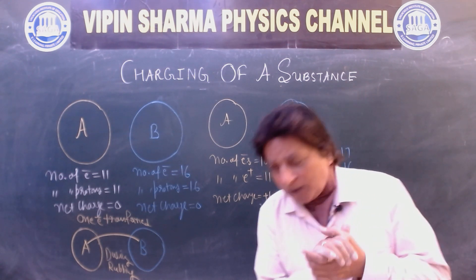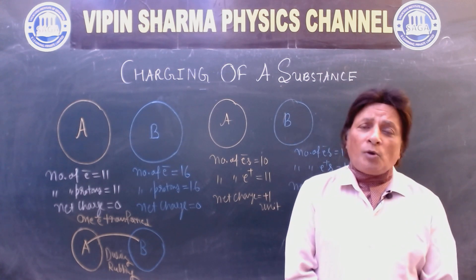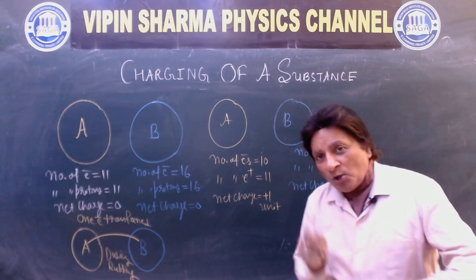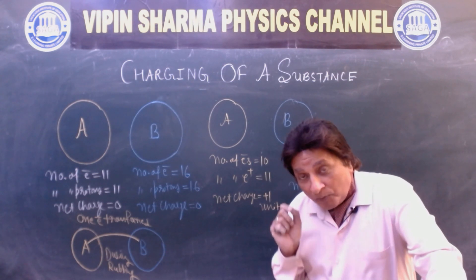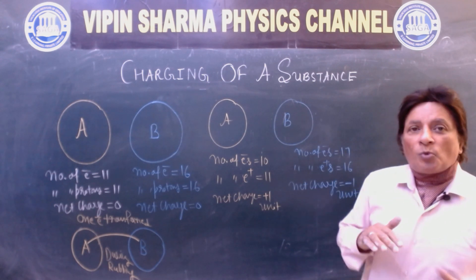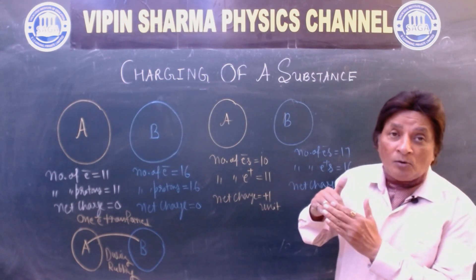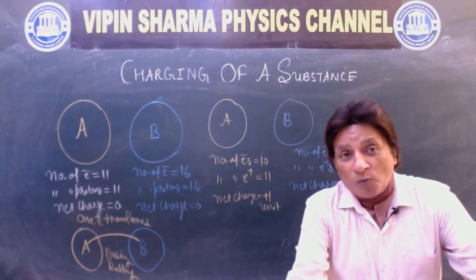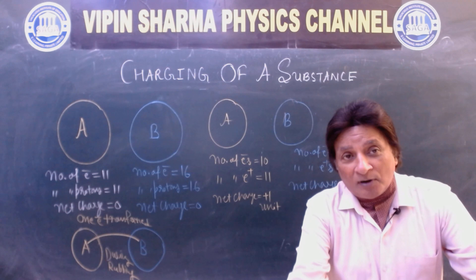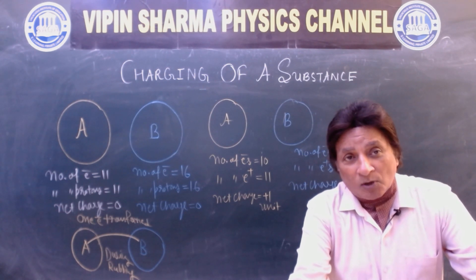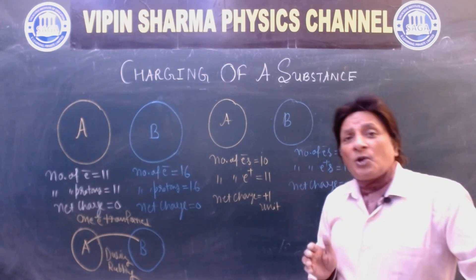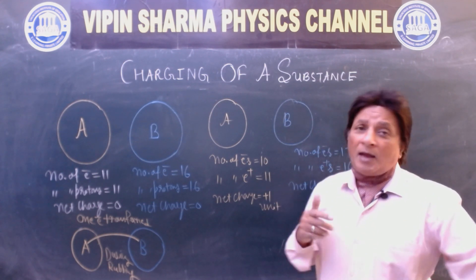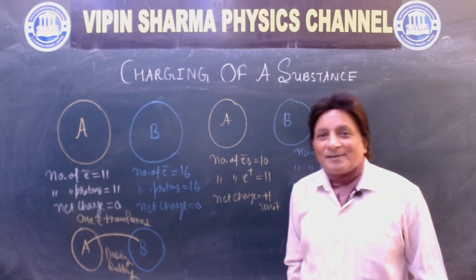Now when we rub, heat energy is generated. When we rub, heat energy is generated. When heat energy is generated students, electrons acquire energy. Electrons acquire energy. The electron which acquires energy transfers to another body.